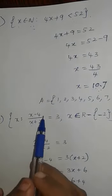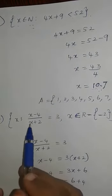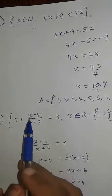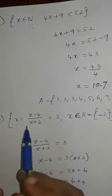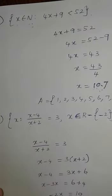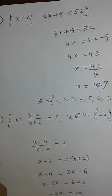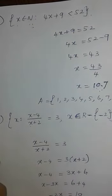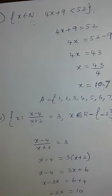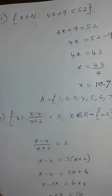Verification: substituting X equals minus 5 gives minus 5 minus 4 equals minus 9, and minus 5 plus 2 equals minus 3, so minus 9 divided by minus 3 equals 3, which confirms the answer. Therefore the solution set is {minus 5}. Question 1 is complete and we move to the second question.